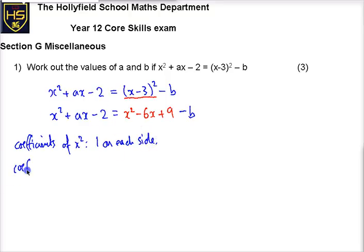If we look at the coefficients of x, compare the coefficients of x, on the left-hand side we've got a, just the numbers in front of the x, and on the right-hand side we've got minus 6. So we can compare that instantly and see that therefore a must be minus 6.